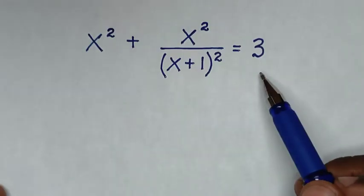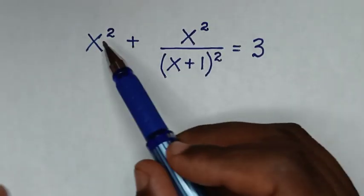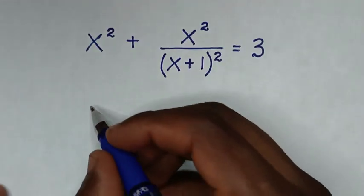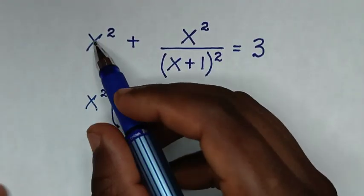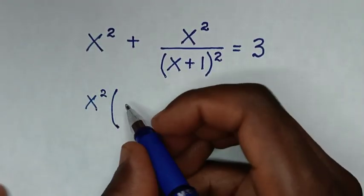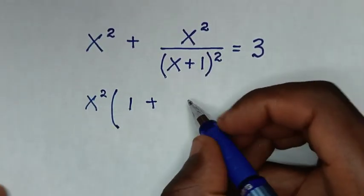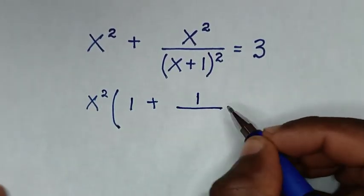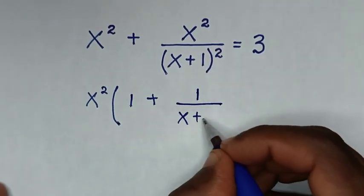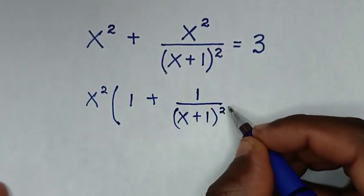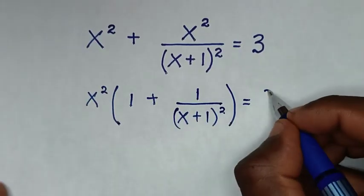To find the values of x from this equation. Now from here on the left side, x² is common, so we'll take x² out of the bracket. Then x²/x² = 1, plus x²/x² = 1, over the denominator (x+1)², bracket equals 3.